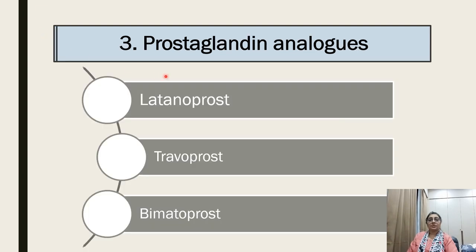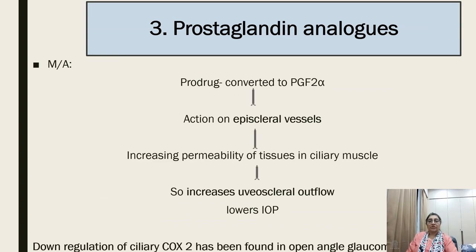The third group is prostaglandin analogs: latanoprost, travoprost, and bimatoprost. Their mechanism of action: as prodrugs they are converted into prostaglandin F2-alpha, which acts on episcleral vessels, increases permeability of tissue in the ciliary muscle, and increases uveoscleral outflow, thereby lowering intraocular pressure. Downregulation of ciliary COX-2 has been found in open-angle glaucoma.